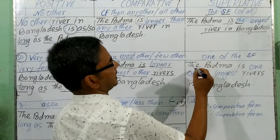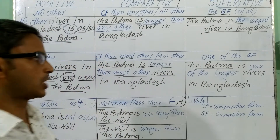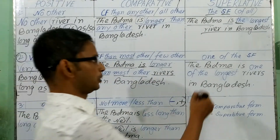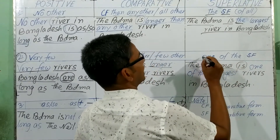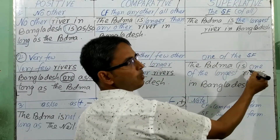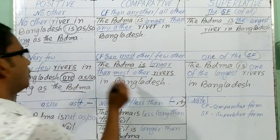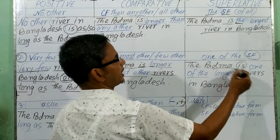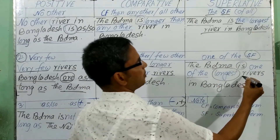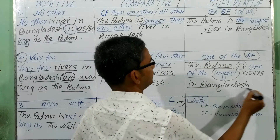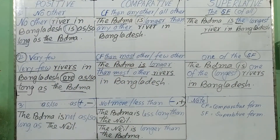Let's go to the next sentence. For the superlative form, at the time of changing to superlative, you write the subject 'the Padma,' then the verb 'is.' According to the rules, you will have to write 'one of the,' then the superlative form. 'Long, longer, longest' — so I have written 'longest.' Then the plural form of noun: 'rivers in Bangladesh.' So: 'Very few rivers in Bangladesh are as long as the Padma.'